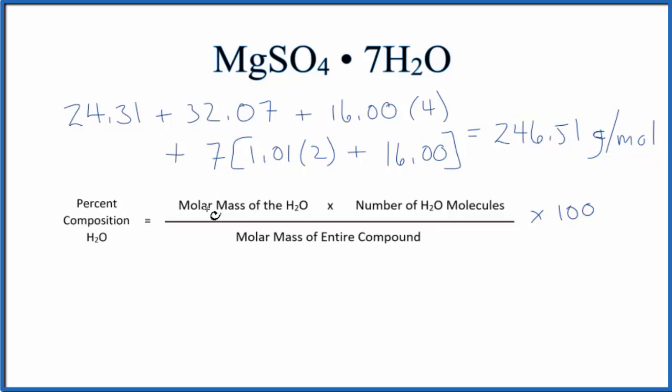We'll use our formula here. We'll take the molar mass of water, that's 18.02 grams per mole, multiplied by the number of water molecules. There are seven separate water molecules around our magnesium sulfate here, and then we'll divide this by